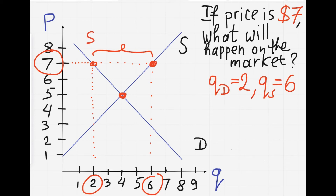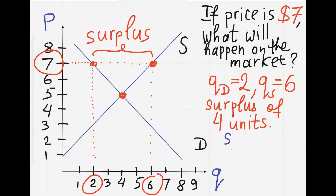It's a surplus of 4 units. And to get rid of the surplus, sellers will most likely cut the price towards $5.